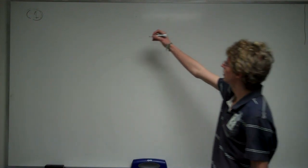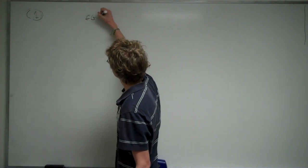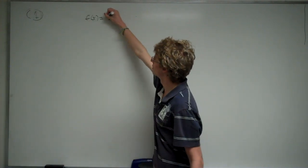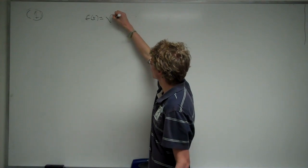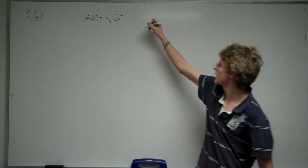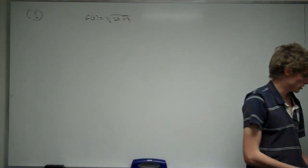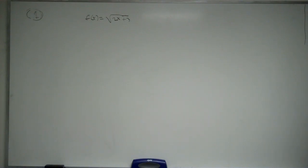So, the question reads, let f of x equal the square root of 2x plus 3. And it asks you to use limits to find the slope of the tangent line to f of x at x equals 3.